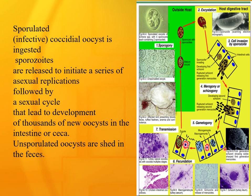Inside the host intestine: when the bird eats the sporulated oocysts, they enter the intestinal cells. Clinical signs of coccidiosis include blood and free blood in the feces in some severe cases. Oocysts undergo sporogony, and these oocysts can be visualized under the microscope.